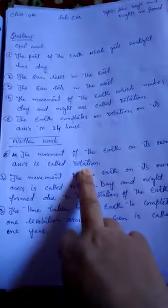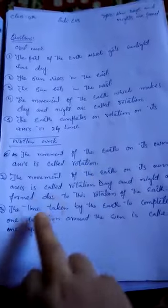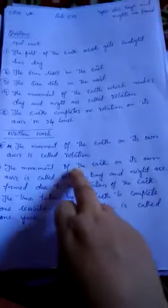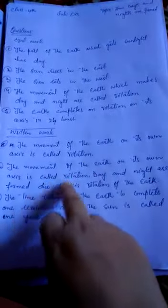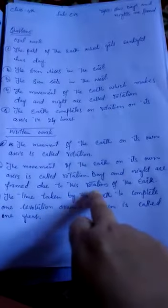Question two: What is rotation? The movement of the earth on its own axis is called rotation. Day and night are formed due to this rotation of the earth.